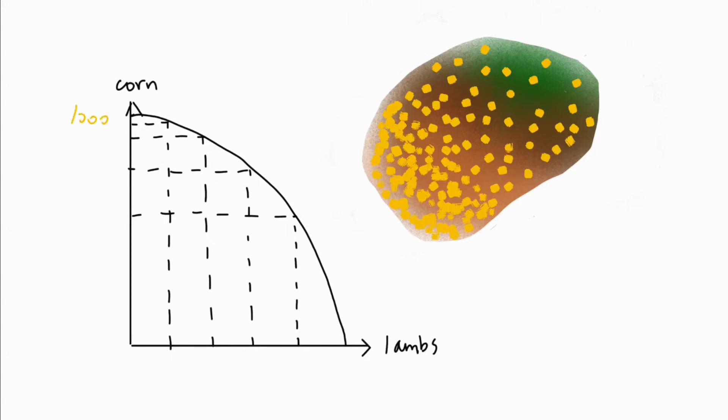Right now, all of this land is used to grow corn, giving us a thousand units, but the economy decides to allocate a little bit of this land to grazing lambs.